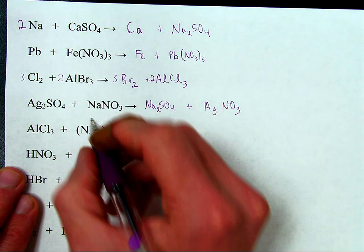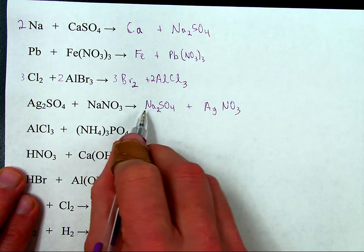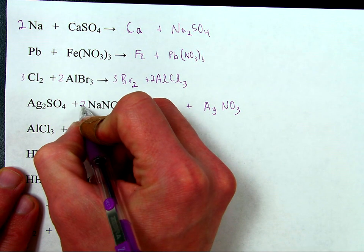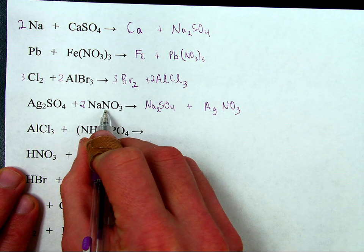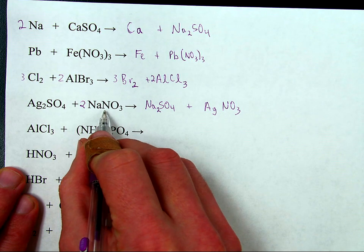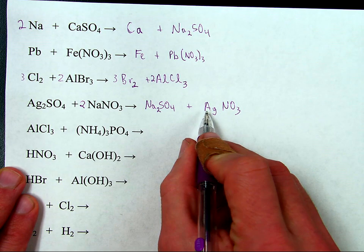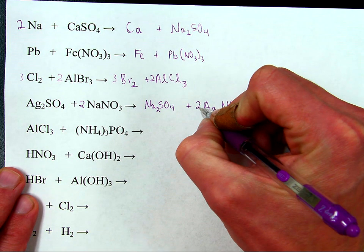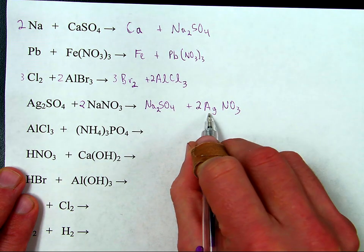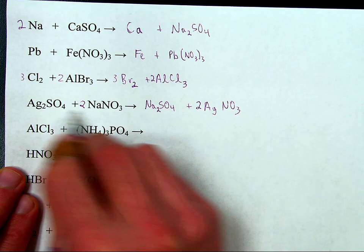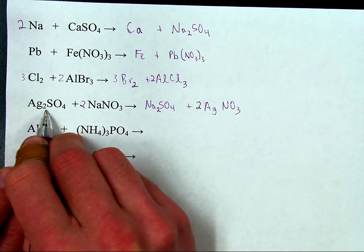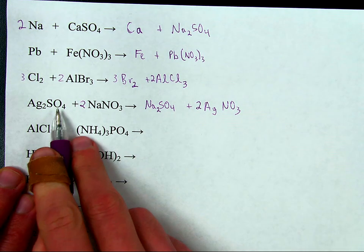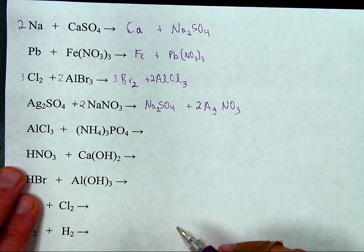Now we balance. Two sodiums here require two sodiums there. There are two nitrates, so to have two nitrates I put a two here — that gives two silvers. And there already are two silvers. One sulfate, one sulfate. This is done.